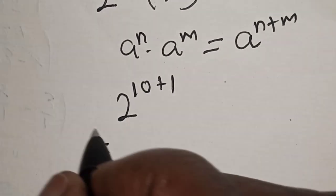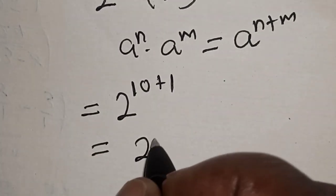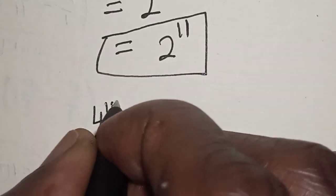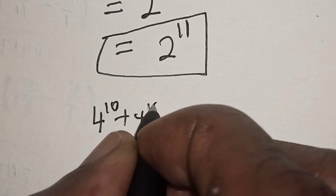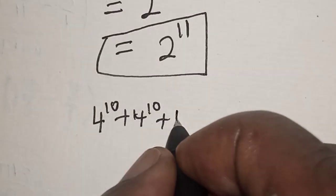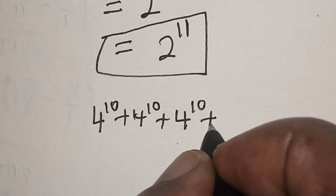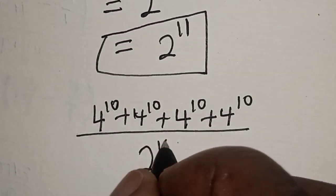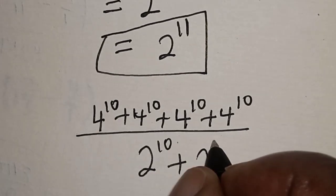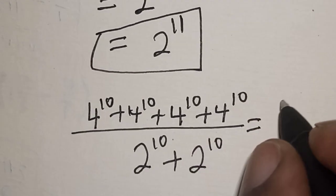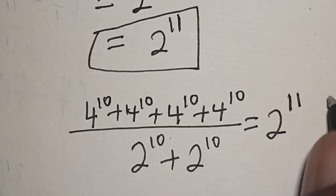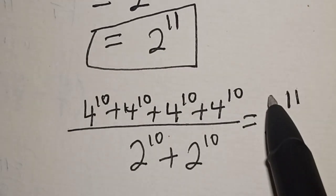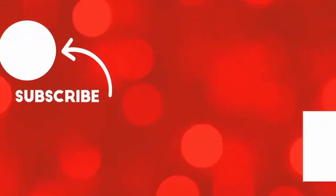This is equal to 2 raised to power 11. Therefore, 4 raised to power 10 plus 4 raised to power 10 plus 4 raised to power 10 plus 4 raised to power 10, divided by 2 raised to power 10 plus 2 raised to power 10, is equal to 2 raised to power 11. If you enjoyed the class, please don't forget to like, share, comment and subscribe. Thank you.